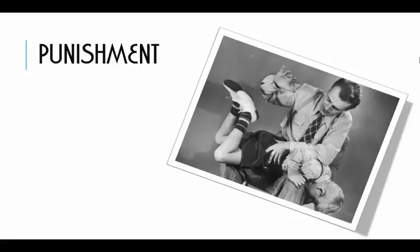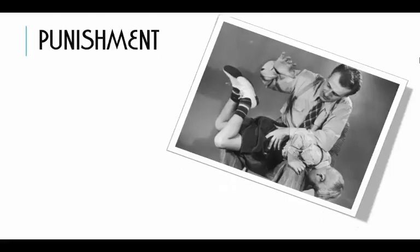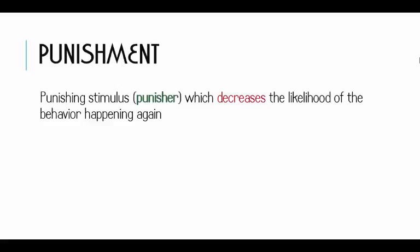Let's come back to operant conditioning, where we said that a behavior happens first and then that behavior is either reinforced or punished. Remember, a reinforcer is anything that increases the chance the behavior will happen again. A punisher is anything that decreases the chance the behavior will happen again.